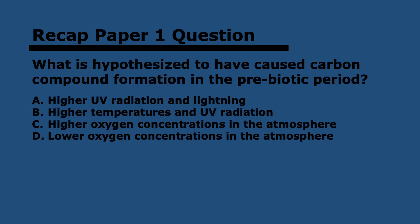Let's do a quick recap question, similar to what you would see in the paper one multiple choice section. The question is: what is hypothesized to have caused carbon compound formation in the prebiotic period? The answer is A — higher UV radiation and lightning. B is true that there were higher temperatures, but that's not the cause for carbon compound formation. This is something very important throughout IB: more than one answer might seem correct, but you need to decide which one is correct for the specific question.